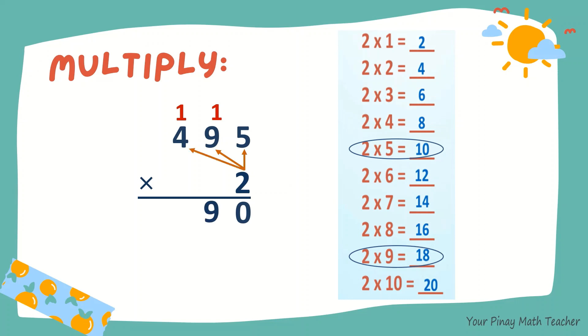2 times 4, 8. Plus 1, 9. So the product is 990.